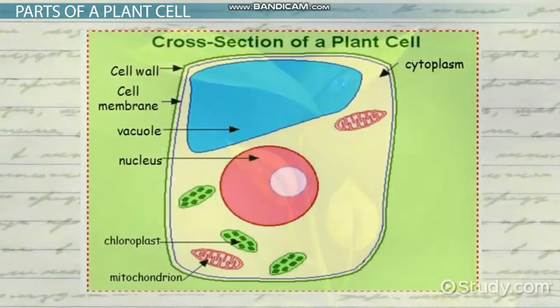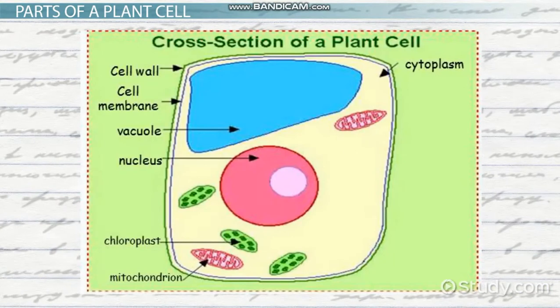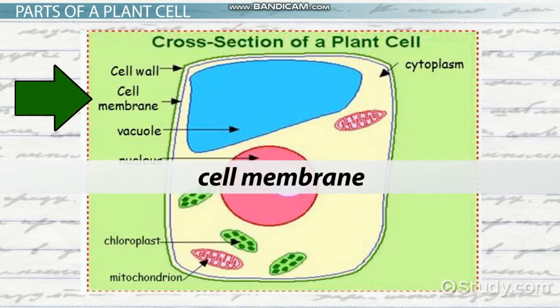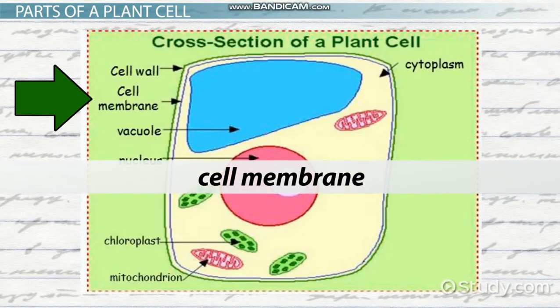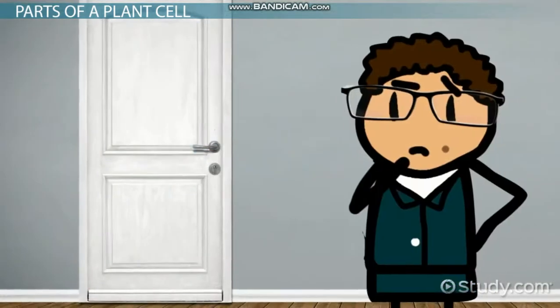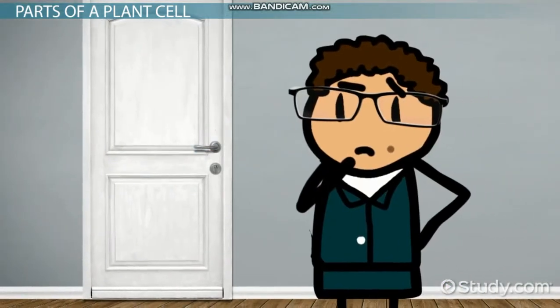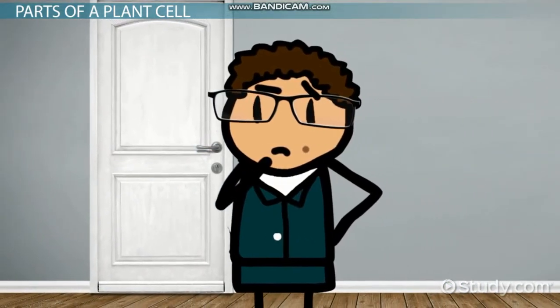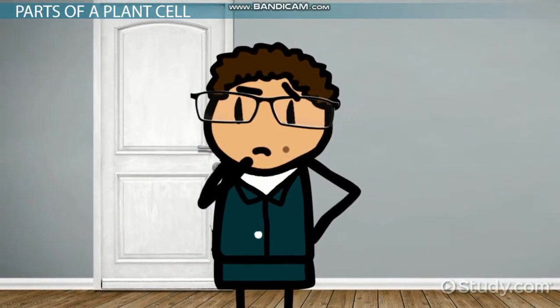On the other side of the cell wall is a cell membrane. This is similar to the doors and paint on the factory wall. It keeps everything inside the cell, but it also allows certain things to enter and exit.